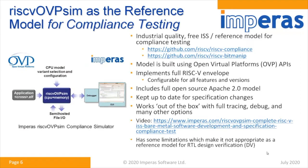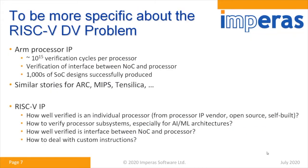That's really where Imperas have come in. We are a simulation technology company. We have provided a technology called OVP-SIM, which has open public APIs for modeling. We have a simulator, RISC-V OVP-SIM, of the RISC-V processor that models all of the standard extensions, and we've made that freely available from GitHub. It's available in the compliance suite and the bit manipulation suites, and it works out of the box — it's really for verification.